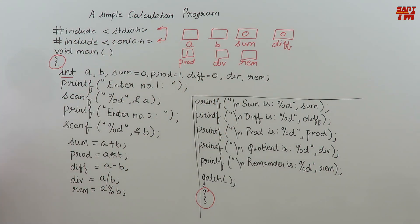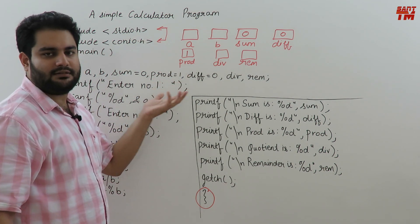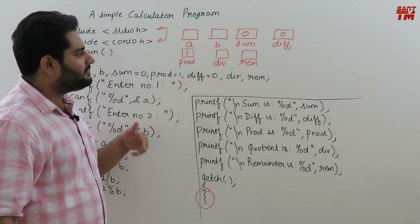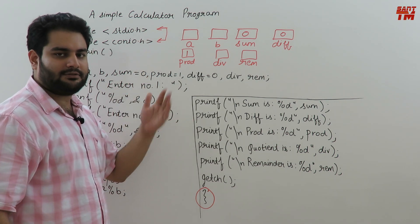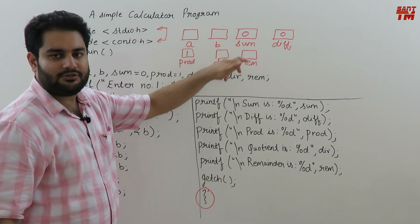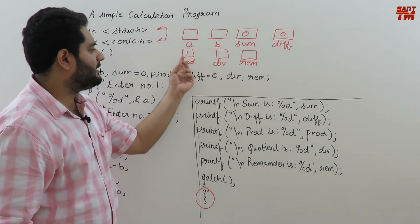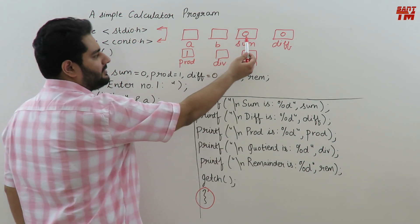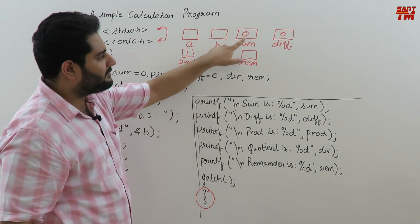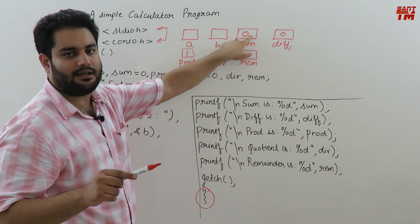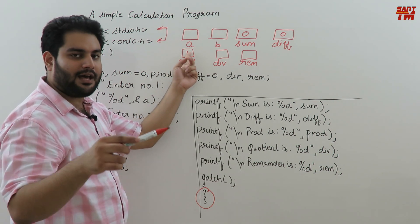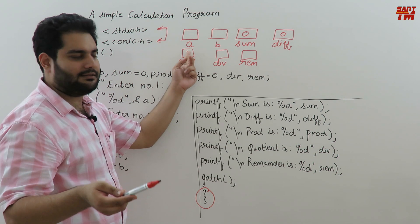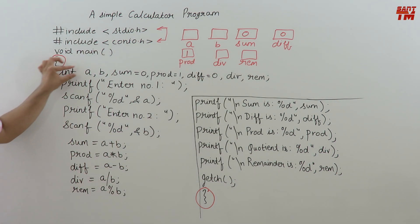I have initialized these before so that no garbage value is assigned to them. A garbage value is any useless value that comes into a memory location if that memory was previously allocated to some other variable. To avoid our result being affected, I write 0, 0, and 1 in their respective places. Adding 0 does not affect our answer, but a garbage value would. Similarly, multiplying by 1 keeps the value the same, whereas multiplying by a garbage value would alter our answer. Using this int statement I have declared these memory locations in the RAM.